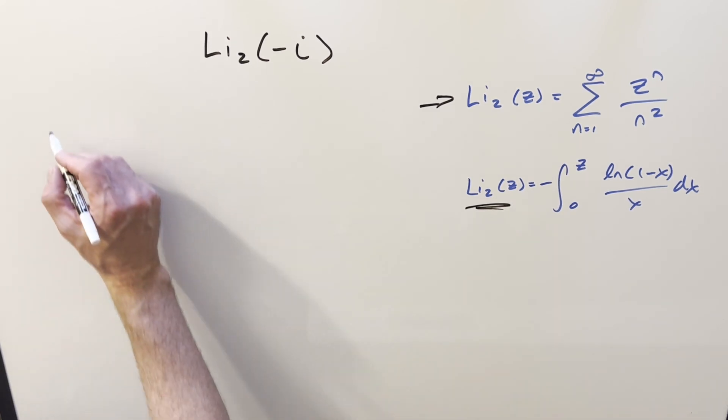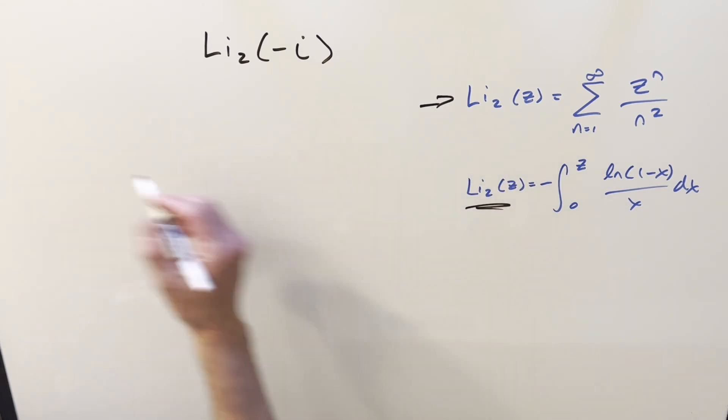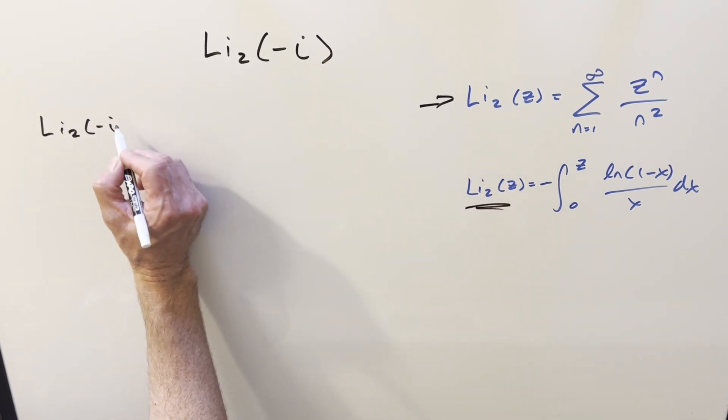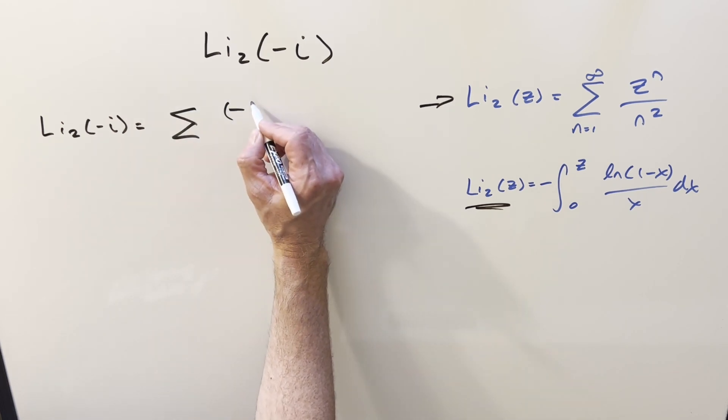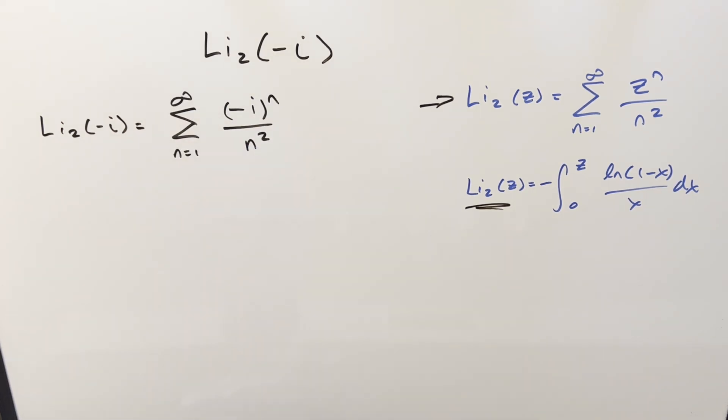So for starters, we'll plug into this series definition. For dilogarithm of minus i, we'll plug it right into the formula. This becomes minus i to the n. Let's expand this out and see what we have. Starting when n is 1, the first term is minus i over 1 squared. I'll write it as 1 squared so we can see what's happening. Then for the second one, when n is 2, when we square this, the negative becomes positive. We get i squared, but that's negative 1. So we have minus 1 over 2 squared.